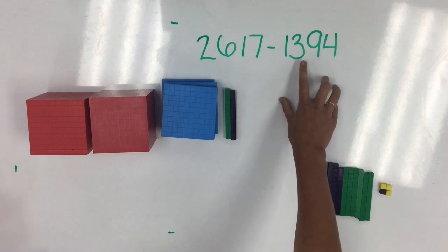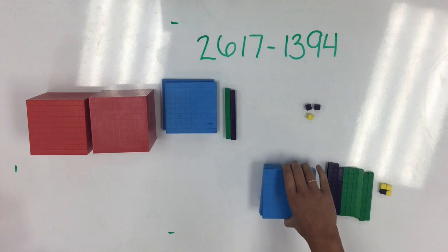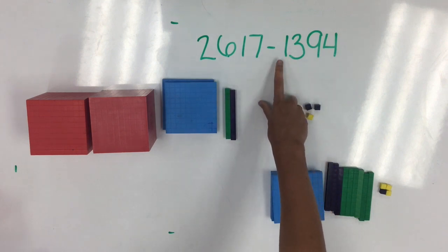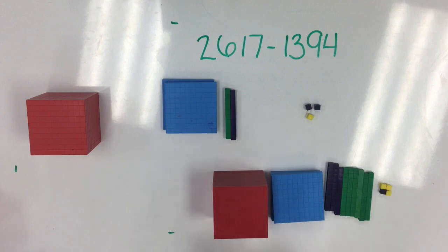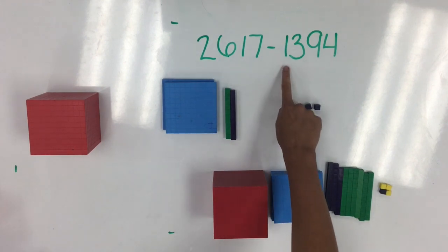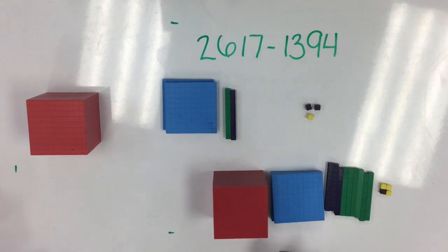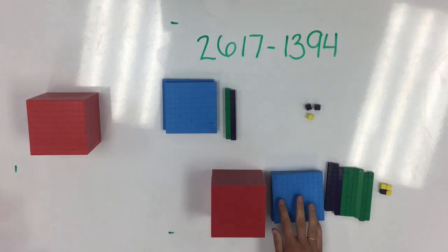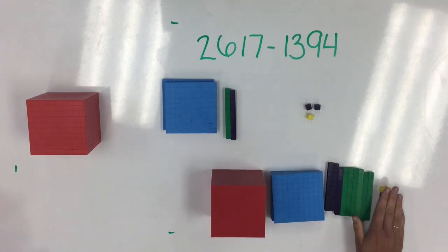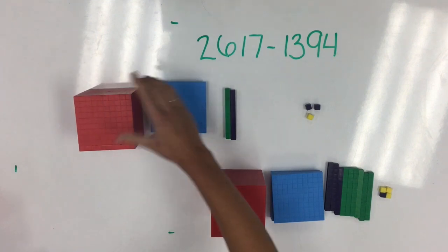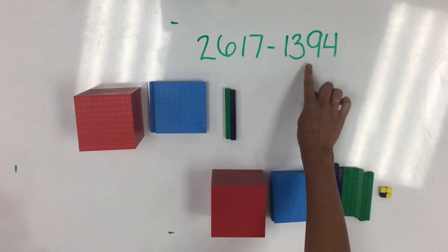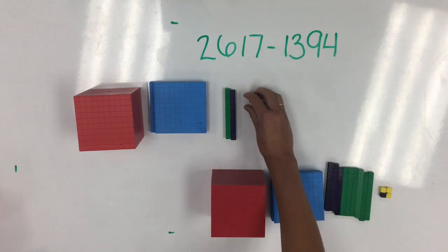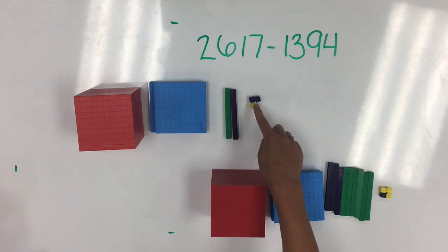Next, we move to the hundreds place, where we take away 1, 2, 3 hundreds. And finally, to the thousands place, where I remove 1,000. To check my work, I can make sure that I have 1,394 taken away, 1,394, which tells me that 2,617 minus 1,394 leaves me with 1,223.